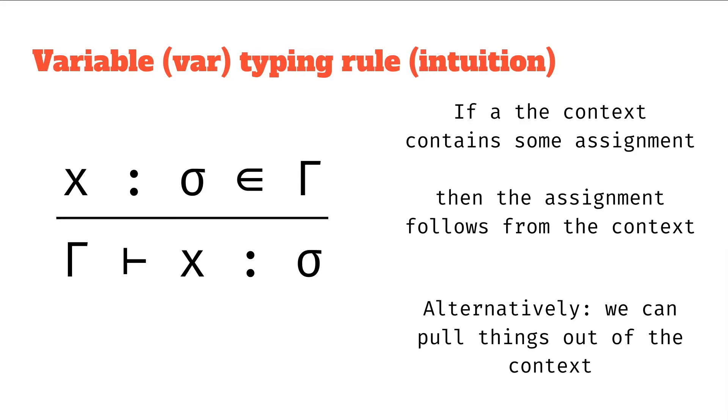If the context contains some assignment, so for example, x has type sigma is contained in the context. So if the context contains some assignment, then that assignment follows from the context. So from capital gamma, it follows that x has type sigma.